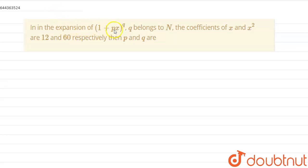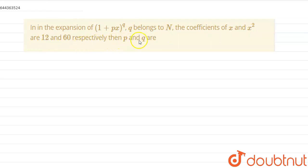In the expansion of (1 + px)^q, where q belongs to the natural numbers, the coefficients of x and x² are 12 and 16 respectively, and we need to find the value of p and q (n).